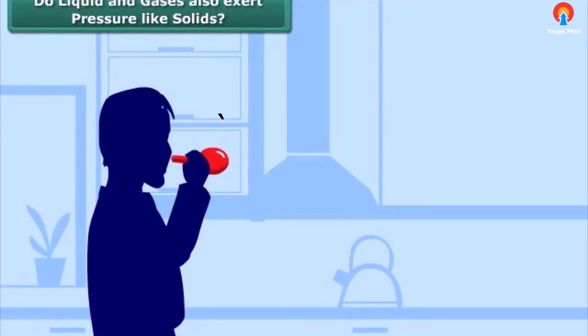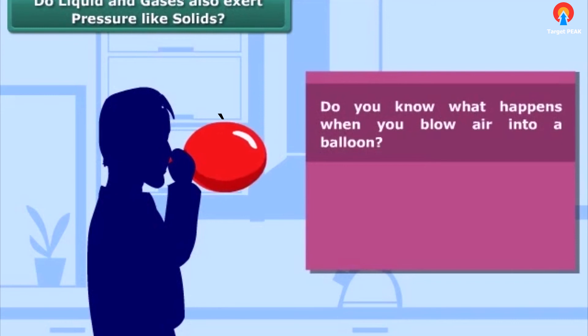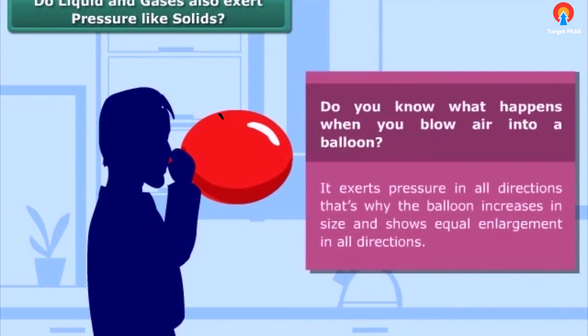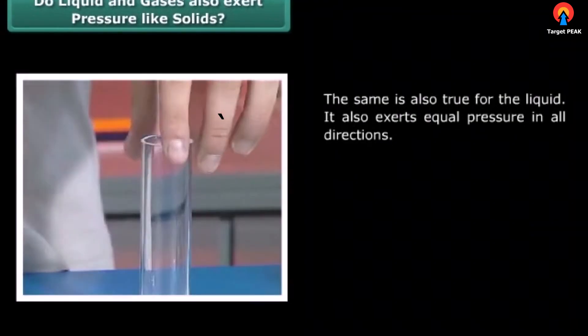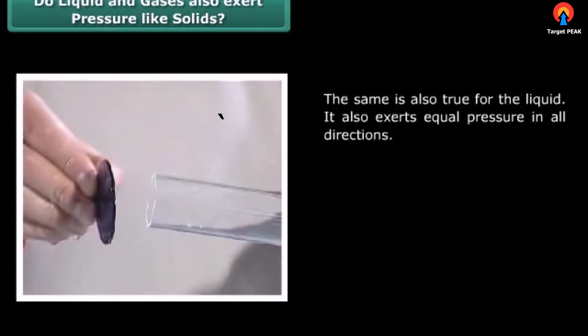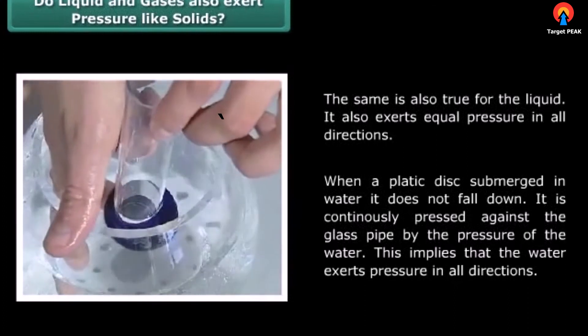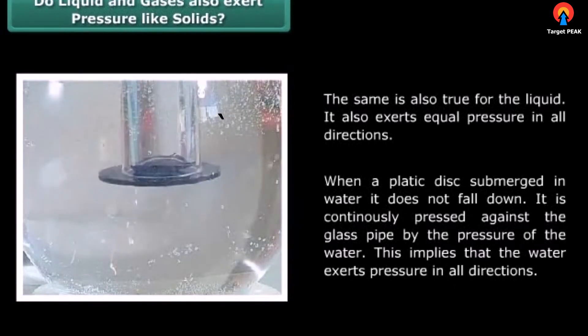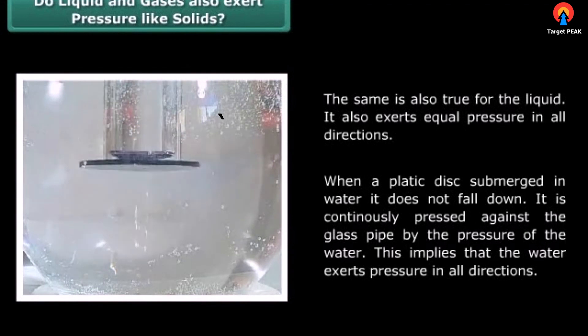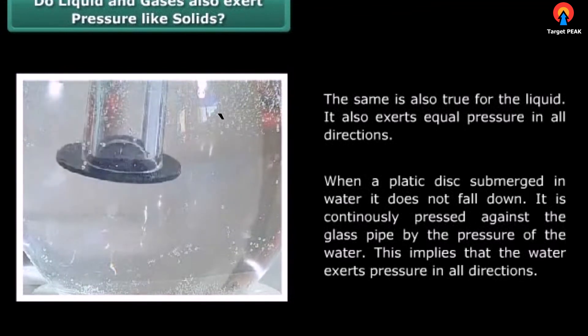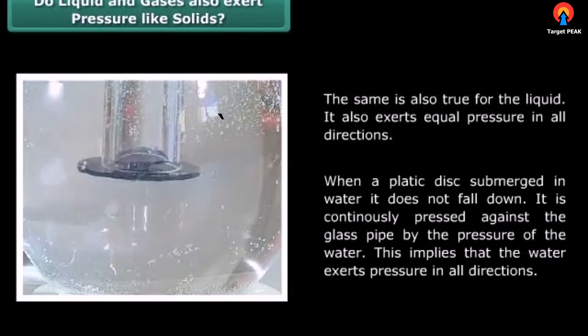Do liquids and gases also exert pressure like solids? Do you know what happens when you blow air into a balloon? It exerts pressure in all directions. That's why the balloon increases in size and shows equal enlargement in all directions. The same is also true for the liquid - it also exerts equal pressure in all directions. When a plastic disc is submerged in water, it does not fall down. It is continuously pressed against the glass pipe by the pressure of the water. This implies that the water exerts pressure in all directions.